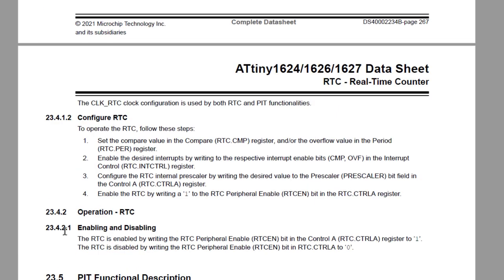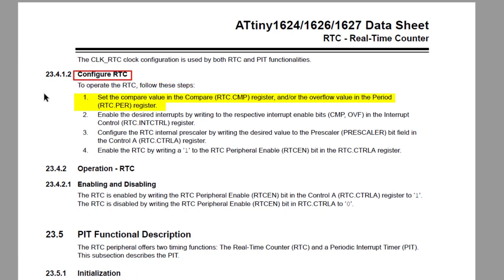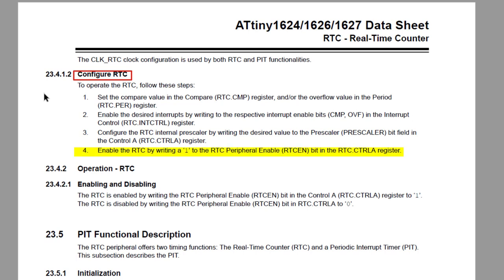Then we need to configure the RTC for operation. Step one: set the compare value in the RTC compare register and/or the overflow value in the RTC period register. Step two: enable the desired interrupts by writing to the respective interrupt enable bits — compare and overflow — in the RTC int control register. Step three: configure the RTC internal prescaler by writing to the prescaler bit field in the RTC control A register. Step four: enable the RTC by writing a one to the RTC peripheral enable in the RTC control A register.